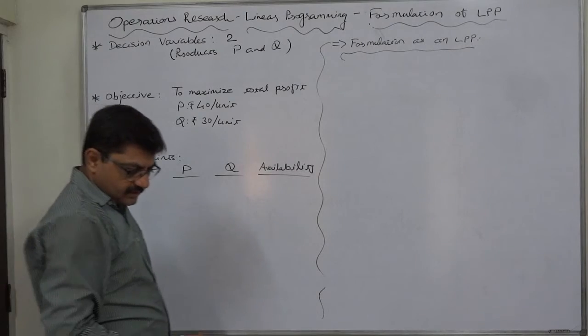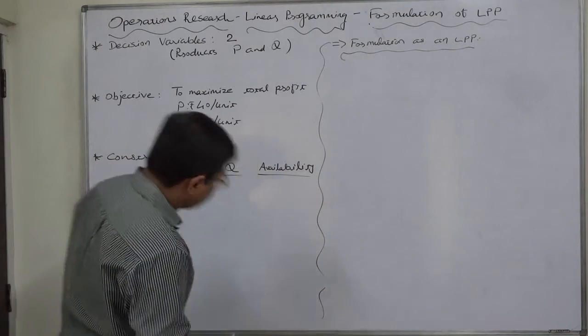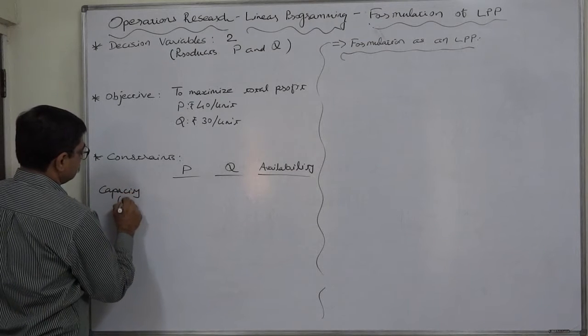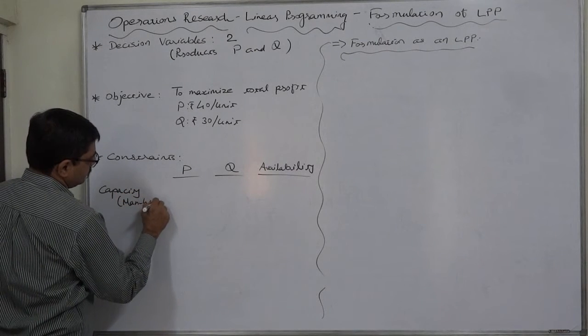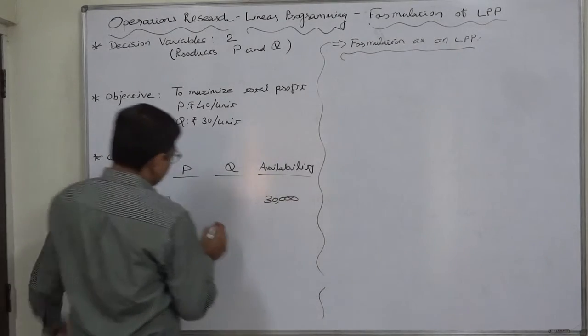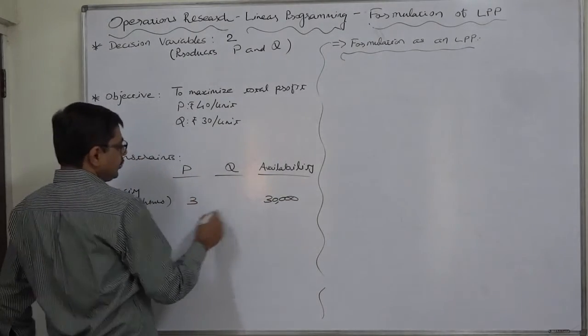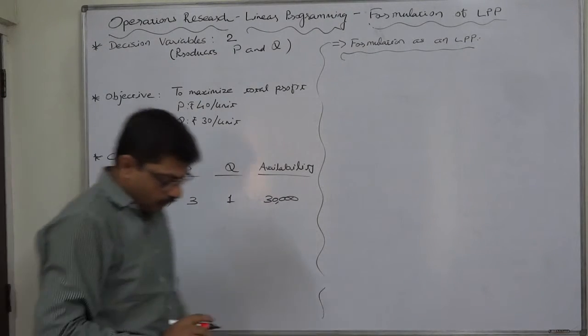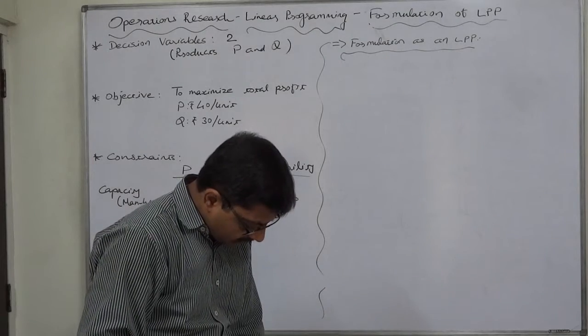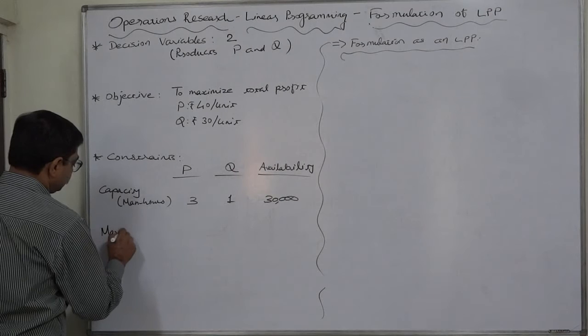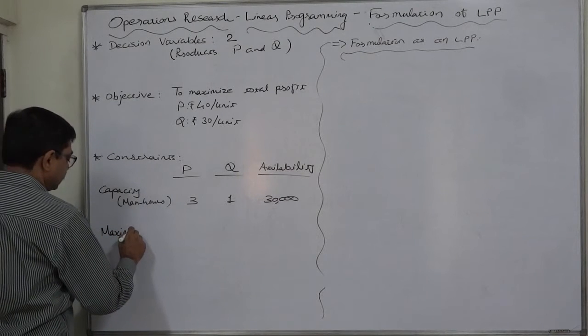As far as the constraints are concerned, the first is capacity or man-hours: availability is 30,000, and use is 3 per unit of P and 1 per unit of Q. In the last part of the question, maximum possible sales - not more than this.